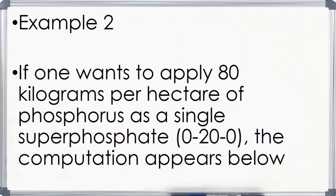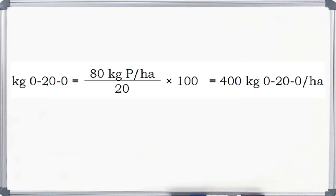Example number 2: If one wants to apply 80 kg per hectare of phosphorus as single super phosphate (0-20-0), the computation is as follows. Single super phosphate needed equals 80 kg of phosphorus per hectare divided by 20, times 100. The result is 400 kg of single super phosphate per hectare.